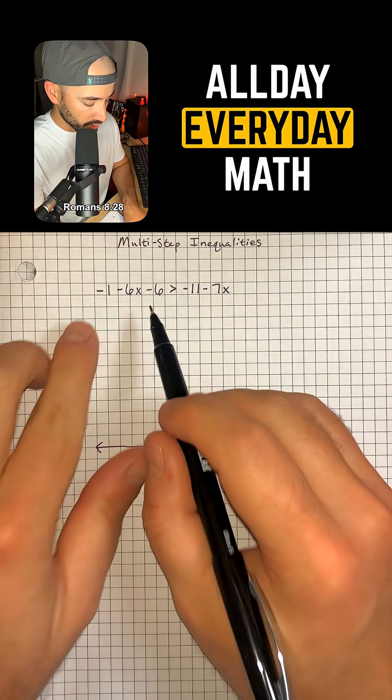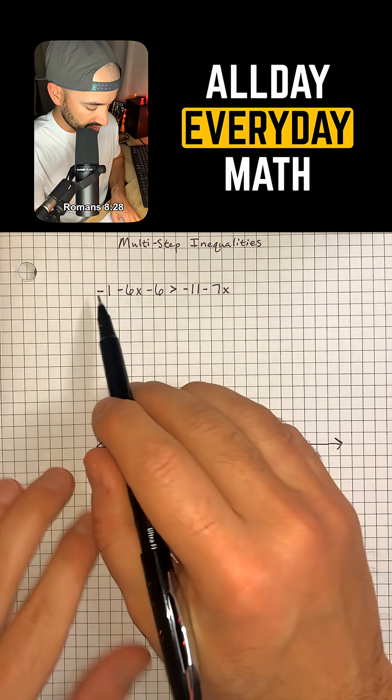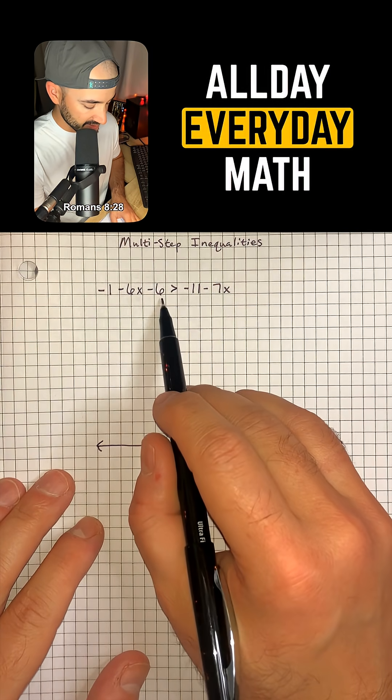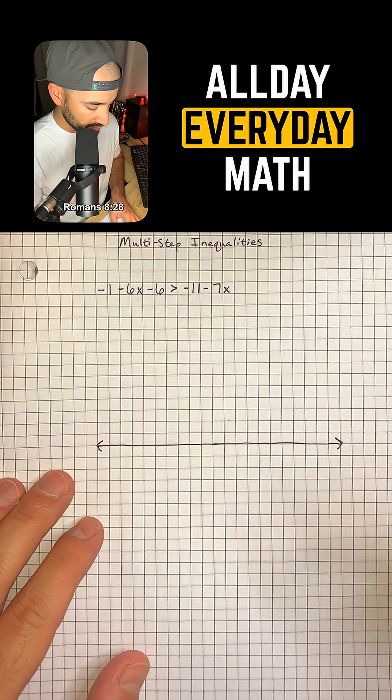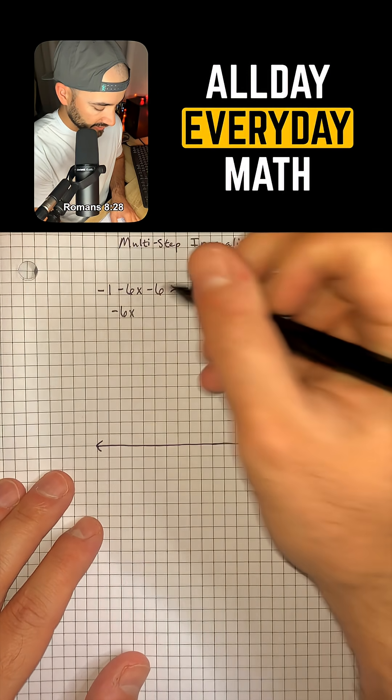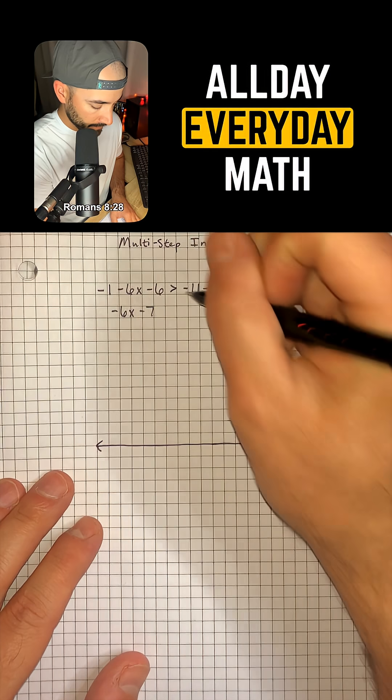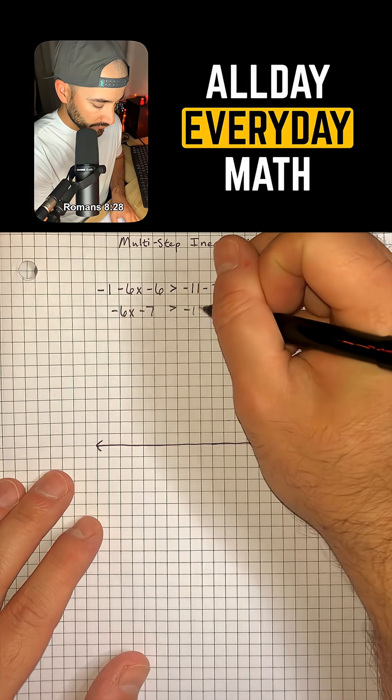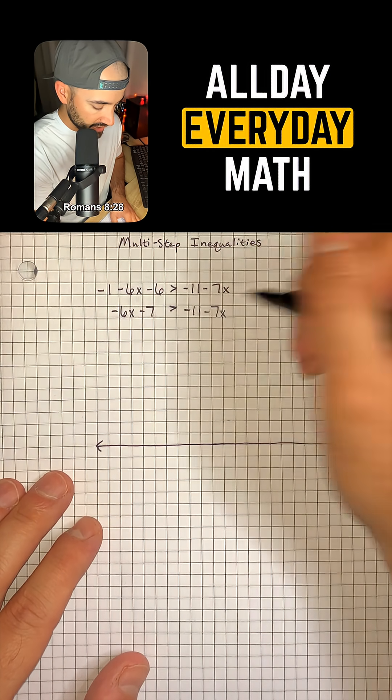So first things first, we are going to combine like terms. Negative 1 minus 6 is going to give us negative 7. So I'm going to rewrite this as negative 6x minus 7 is greater than negative 11 minus 7x.